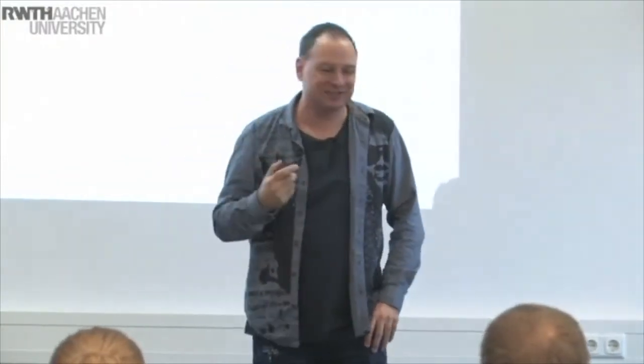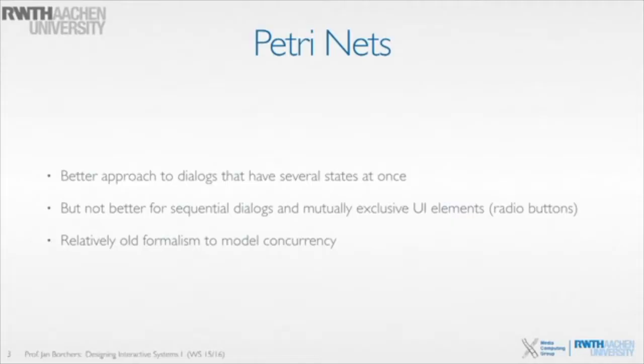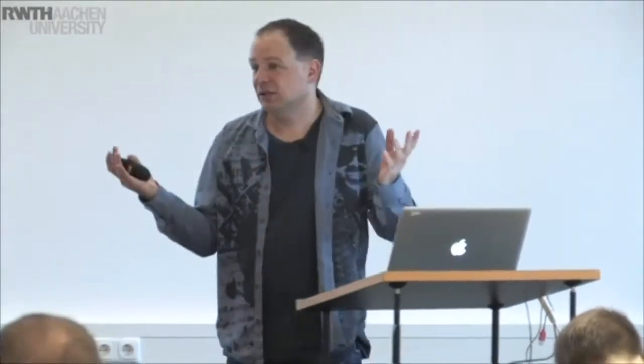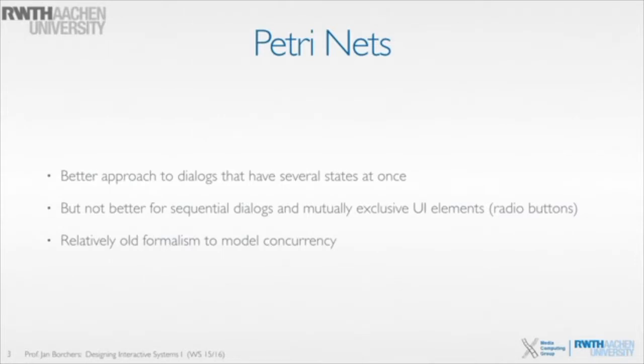Petri Nets are a much better approach to modeling dialogues than state transition networks. They don't work so well if you're trying to do things sequentially — for that you use regular expressions and production rules. In reality you just combine these notations as needed: if part of a dialogue needs to be written down sequentially, use an STN; if it's highly parallel, use production rules or Petri Nets. Raise your hand if you have never seen Petri Nets in any of your classes.